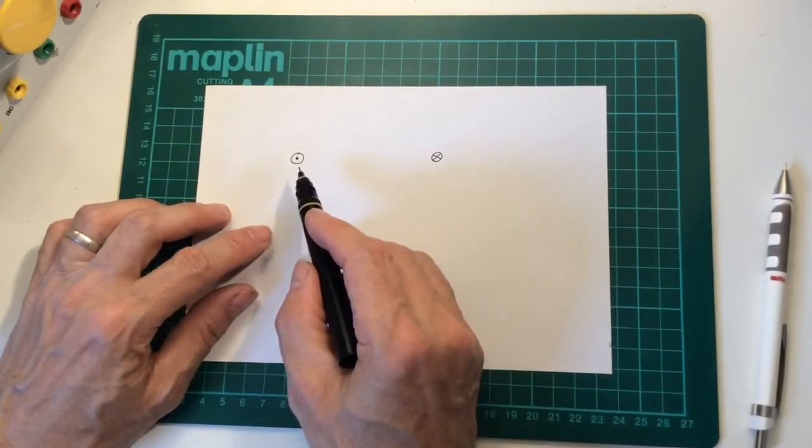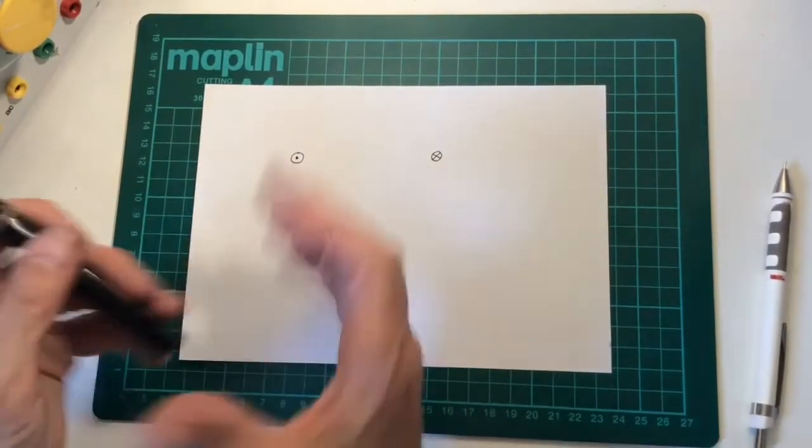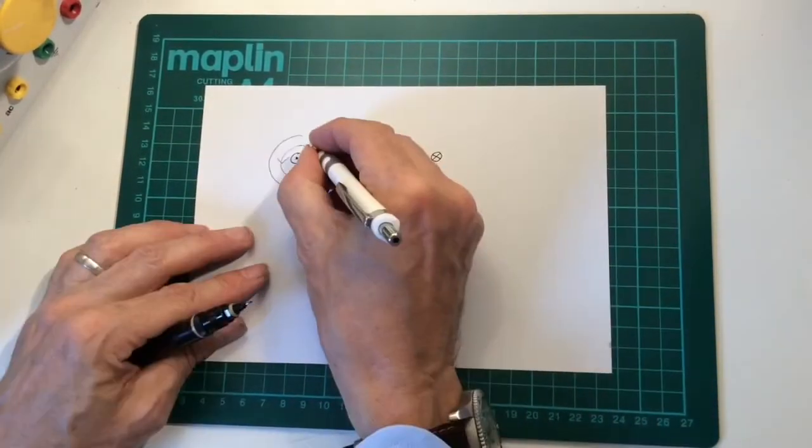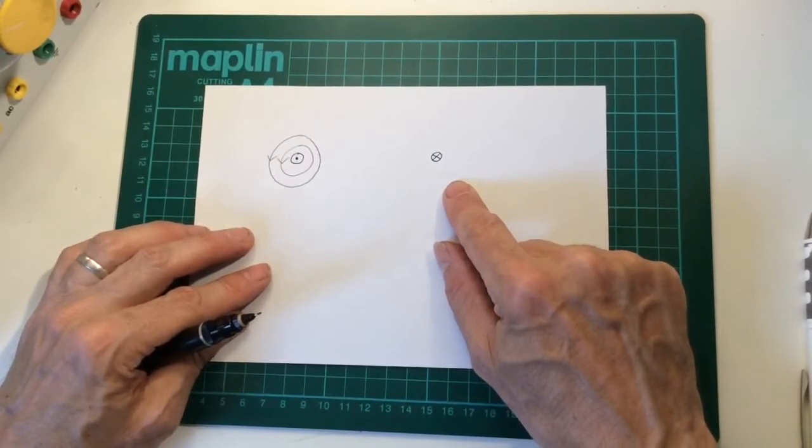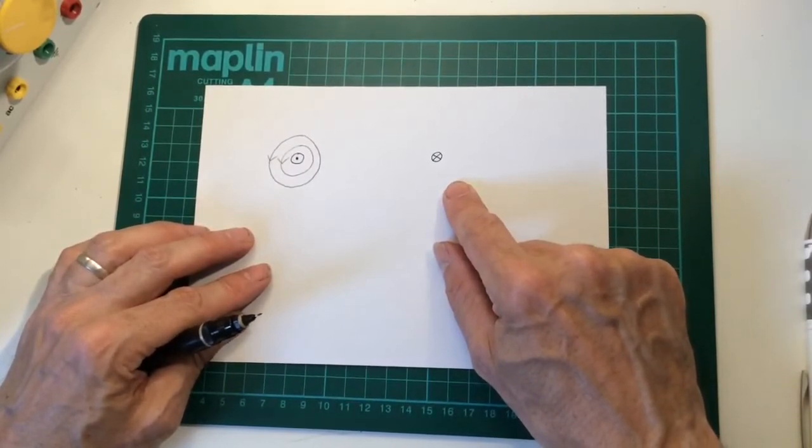If this was current in a wire it would be coming towards us. We could draw the field lines using our right hand grip rule. If this was current in a wire moving away from us again we could draw the field lines using our right hand grip rule.